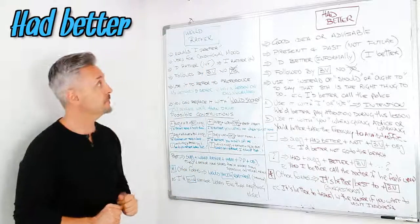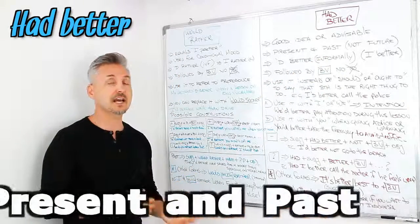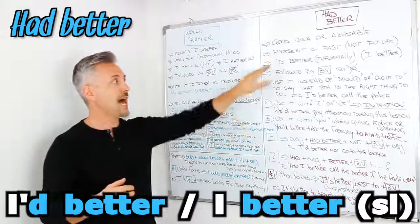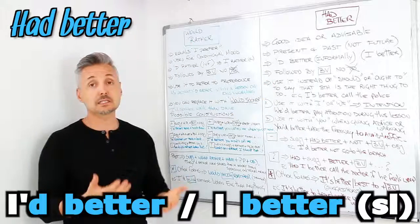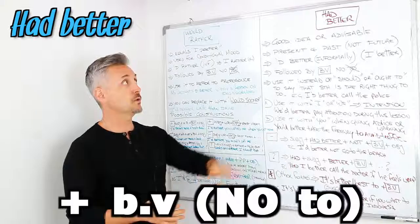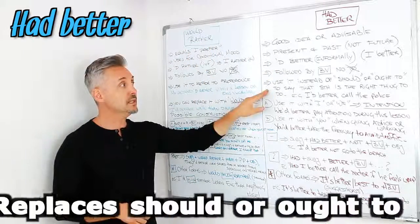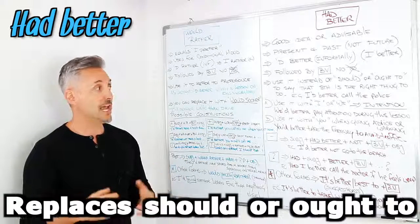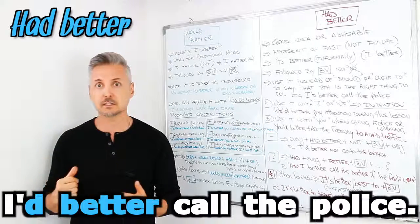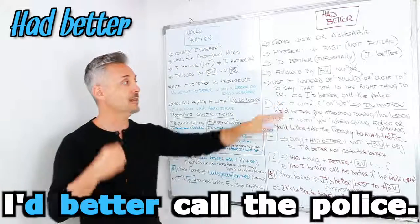Now let's take a look at 'had better'. 'Had better' means it's a good idea or it is advisable, and we use it in the present and in the past, not the future. When we speak, we say 'I'd better' informally, or in slang 'I better' without the 'd'. It is followed by the base of the verb without 'to' — that's why it gets confusing, because it's the same as with 'rather', but the meaning changes. Use it instead of 'should' or 'ought to' to say that something is the right thing to do. For example: 'I'd better call the police — there is a fight out in the streets.'